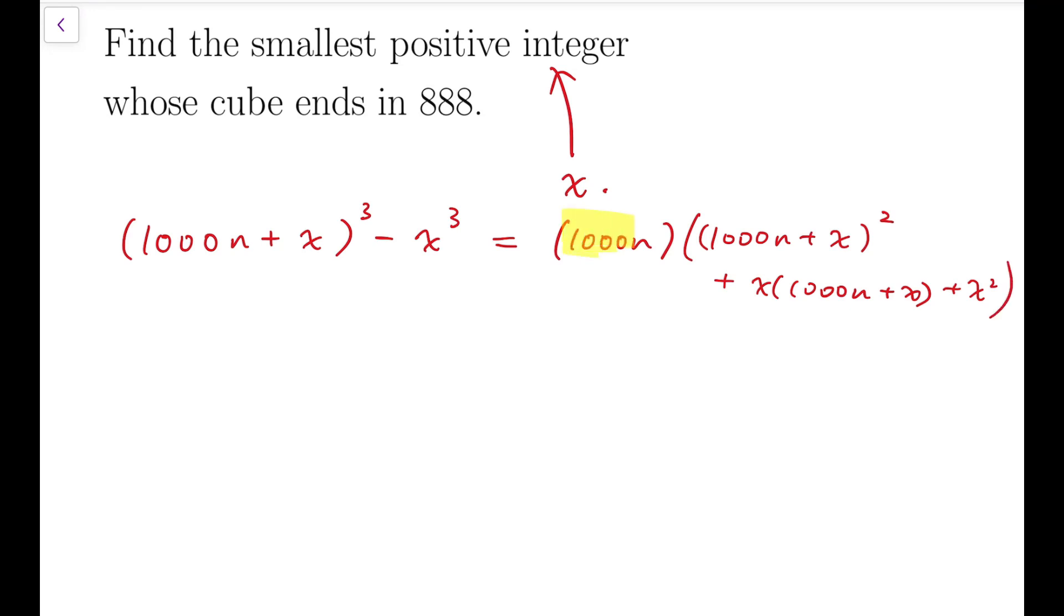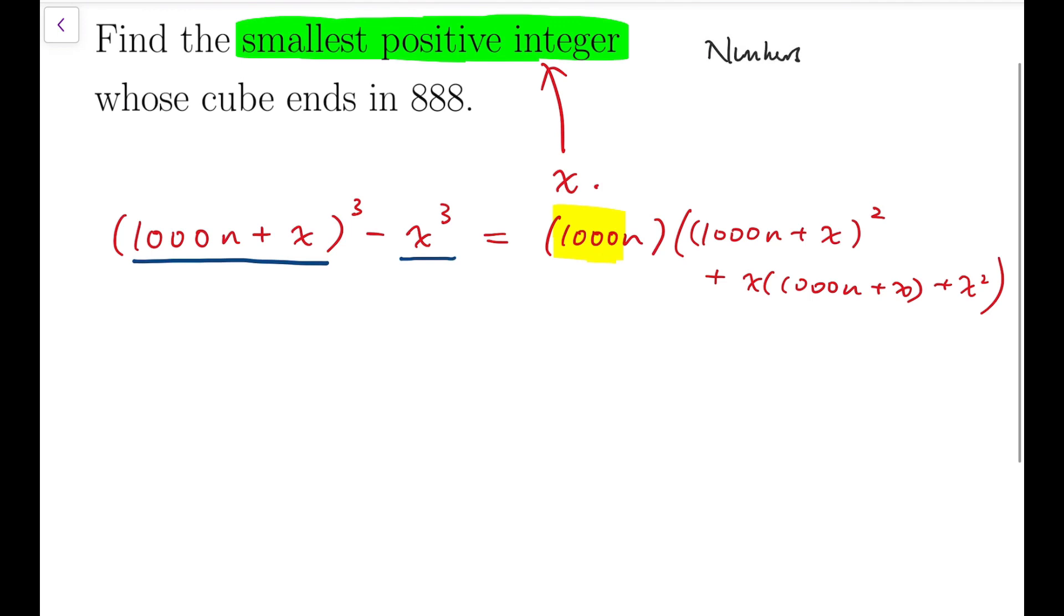So let me just write down the other details. But that's not important because all we want to know is that this is a multiple of a thousand. And so because we are only looking for the last three digits of the cube, these two cubes are going to have the same ending three digits.